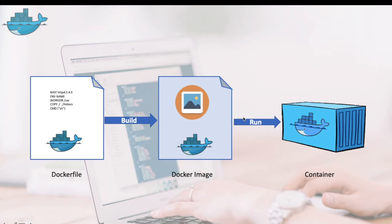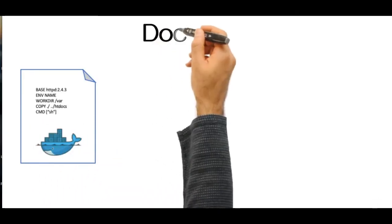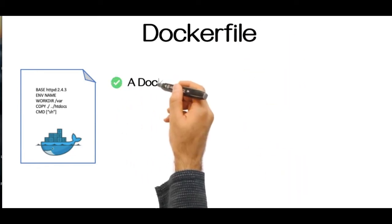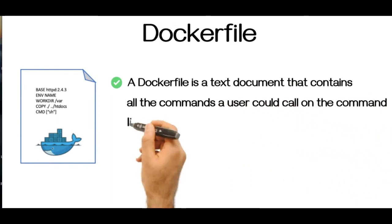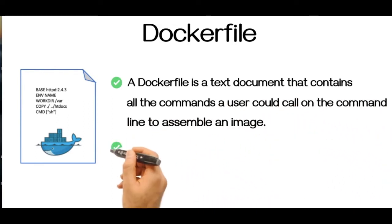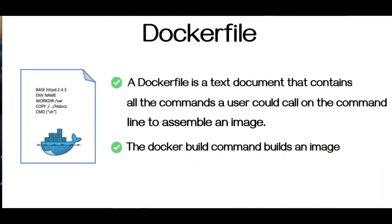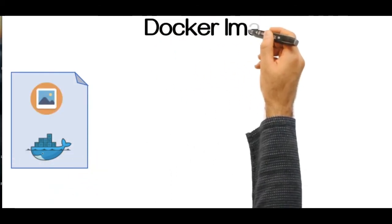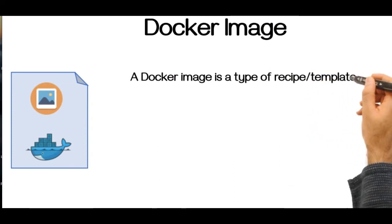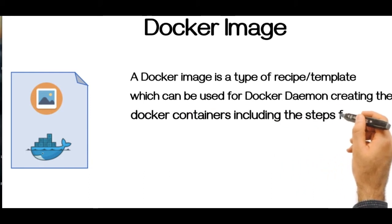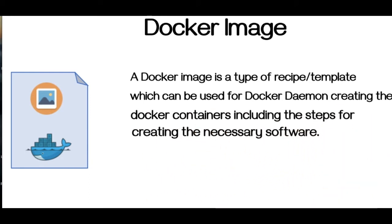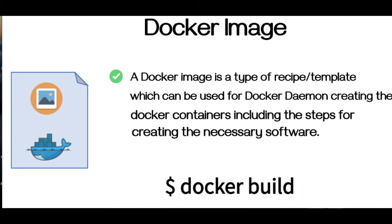Before moving forward, let's understand the different Docker objects. A Dockerfile is a text document that contains all the commands a user could call on the command line to assemble an image. The docker build command builds an image from a Dockerfile and a context. A Docker image is a type of recipe or template which can be used by the Docker daemon for creating Docker containers, including the steps for creating the necessary structure.